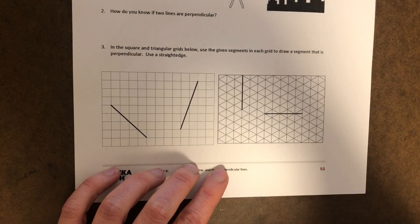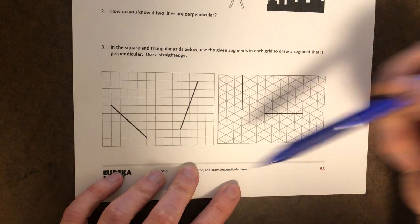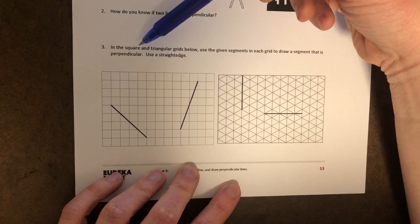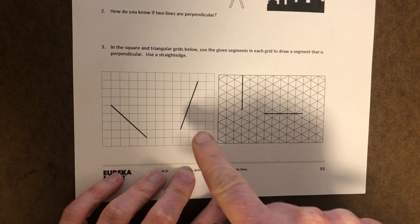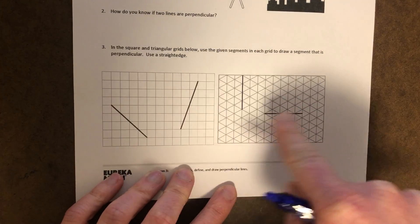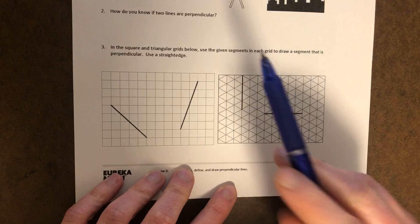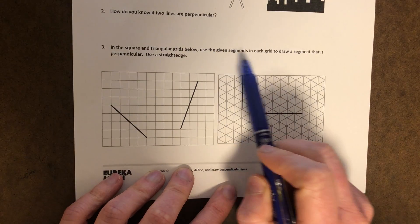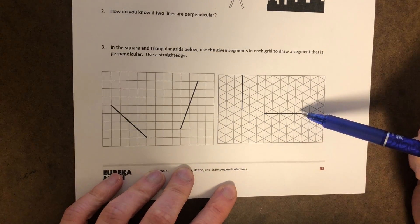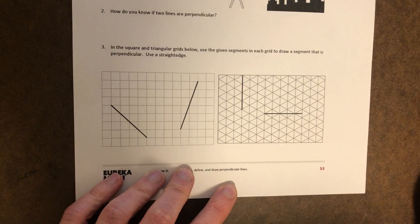Okay, in the next slide, you're going to do something just like this activity. In the square and triangular grids below, so here's the square grids, and here you can see the triangle grids below, use the given segments in each grid to draw a segment that is perpendicular.